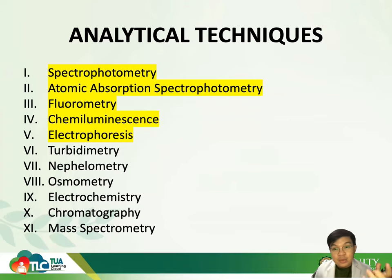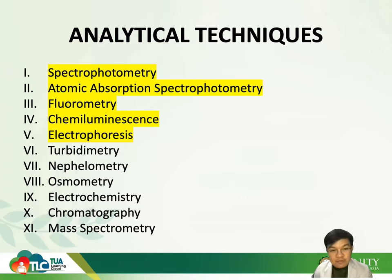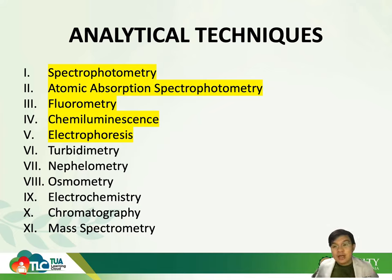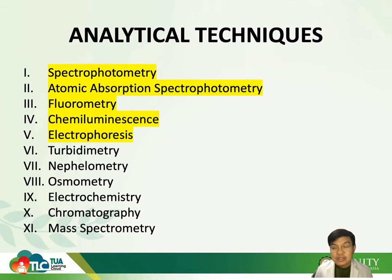For this particular part, we're actually done with spectrophotometer, AAS, fluorometer, chemiluminescence, and electrophoresis. Now we're going to discuss turbidimetry, nephelometry, osmometry, and electrochemistry. I think I would be doing a separate video for chromatography. And for the very last video, we'll be discussing mass spectrophotometry and general principles of automation, although no problem with automation because we've already started automation in your laboratory. I was already able to discuss some of the key points or driving forces that led to automation in the clinical laboratory.